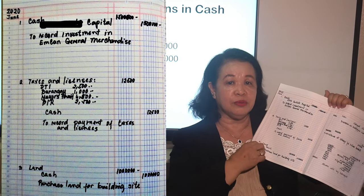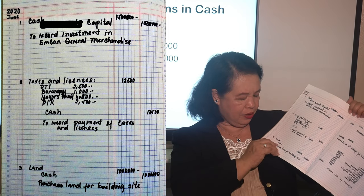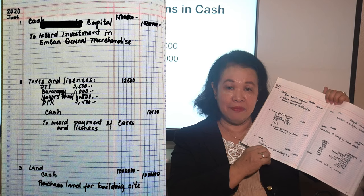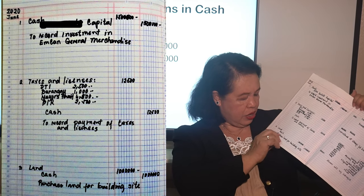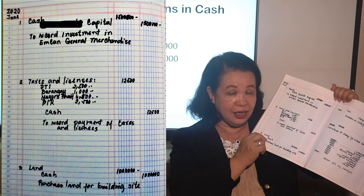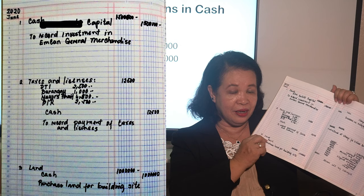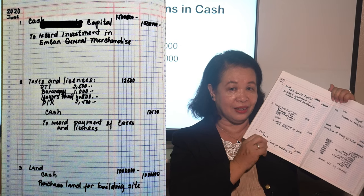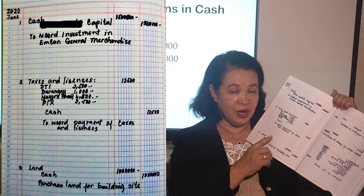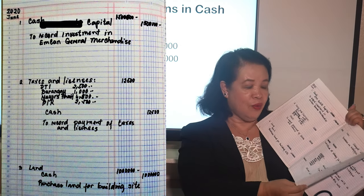The next transaction: I bought land worth 1,000,000 to put a building on. What is the journal entry? Debit land 1,000,000, credit cash 1,000,000. We reduced our cash by 1,000,000.